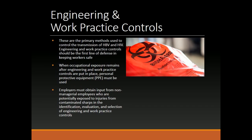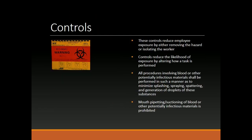Engineering and Work Practice Controls. These are the primary methods used to control the transmission of HBV and HIV. Engineering and work practice controls should be the first line of defense in keeping workers safe. When occupational exposure remains after these controls are put in place, personal protective equipment must be used. Employers must obtain input from non-managerial employees who are potentially exposed to injuries from contaminated sharps in the identification, evaluation, and selection of engineering and work practice controls. These controls reduce employee exposure by either removing the hazard or isolating the worker, or by altering how a task is performed. All procedures involving blood or other potentially infectious materials shall be performed in such a manner as to minimize splashing, spraying, spattering, and generation of droplets of these substances.